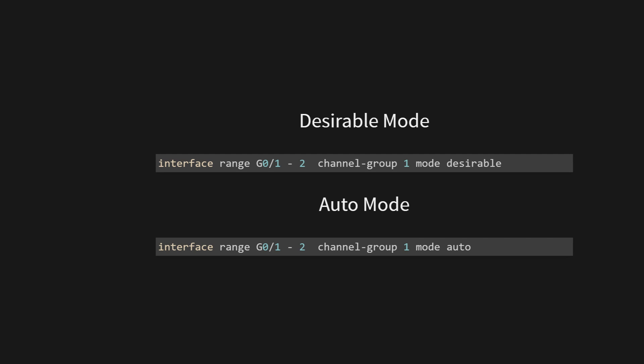In auto mode, the interface passively waits for the other side to initiate the EtherChannel negotiation. This command configures GigabitEthernet 0/1 and GigabitEthernet 0/2, grouping them into a port channel interface using channel group 1. However, this time we're using a slightly different negotiation mode: auto.